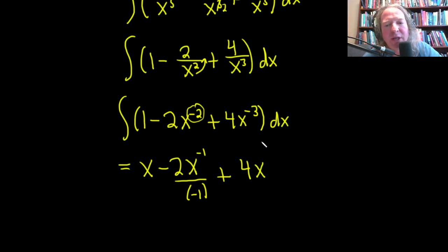Plus 4x to the negative 3 is the exponent. We add 1 to the exponent, so it's going to be negative 2, because 1 plus negative 3 is negative 2. And then you divide by the negative 2. Got to be extra careful when there's negative numbers involved. It's very easy to get confused. So you add 1, divide, add 1, divide, plus c.